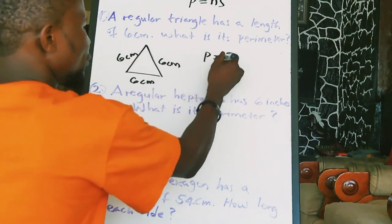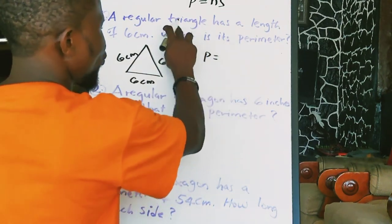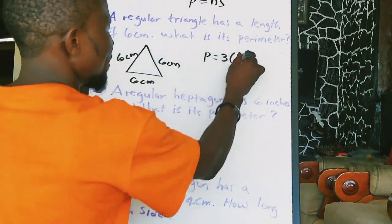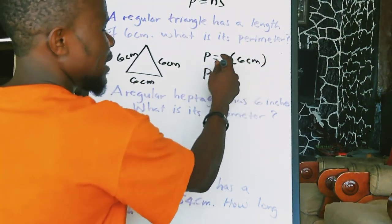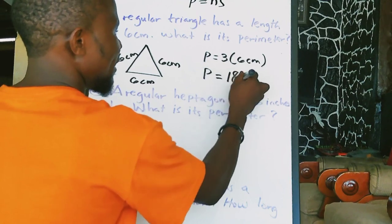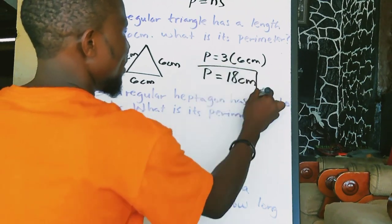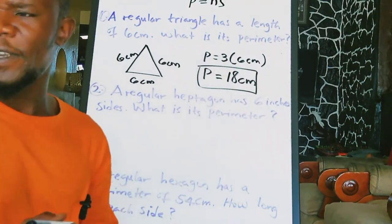So we'll have P is equal to, for a triangle is 3 times 6 cm. So therefore, P would be equal to 3 times 6, which is 18 cm. This is the result of the first one here.